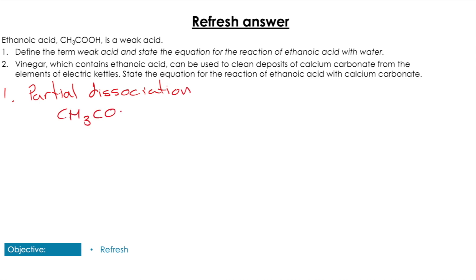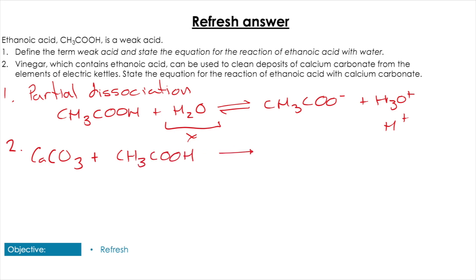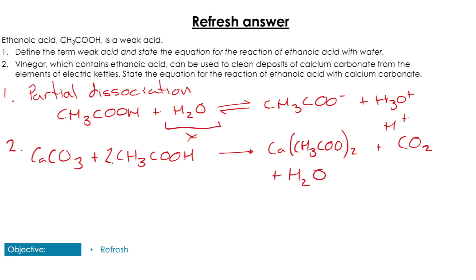CH₃COOH reacts with H₂O but is in equilibrium — we remove that proton to give H₃O⁺, but the equilibrium lies to the left because it's a weak acid. The next part is the reaction of ethanoic acid with calcium carbonate: CaCO₃ forms the salt CH₃COO⁻Ca²⁺, plus carbon dioxide and water.